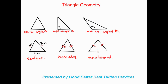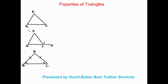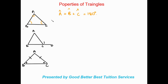Those are the different types of triangles. Now we're going to look at the properties of these triangles. In triangle ABC, all three angles — angle A, angle B, and angle C — add up to 180 degrees. This is the first and most important property of all triangles, and we use it as a base for most of our calculations.